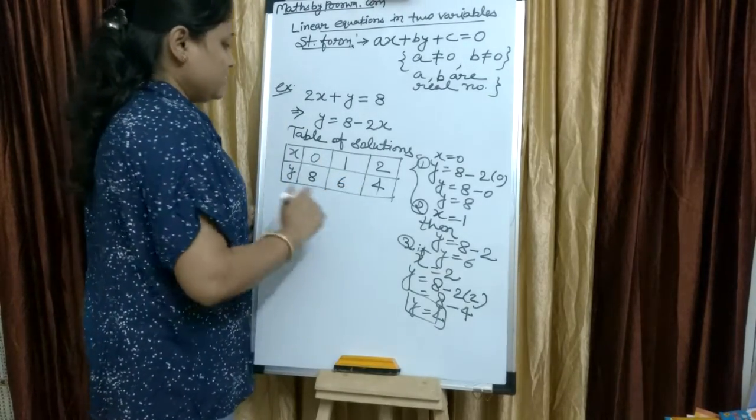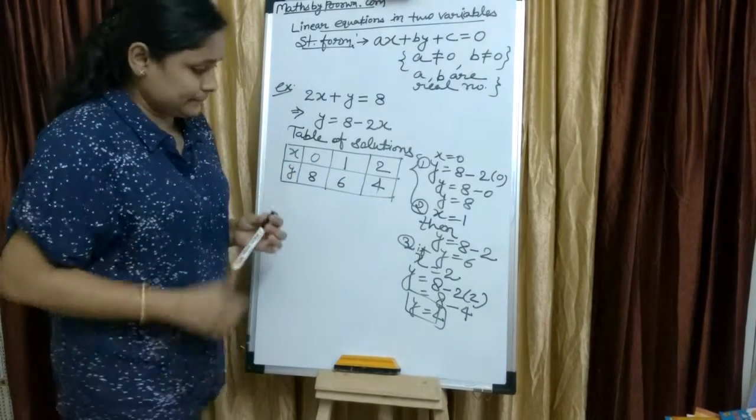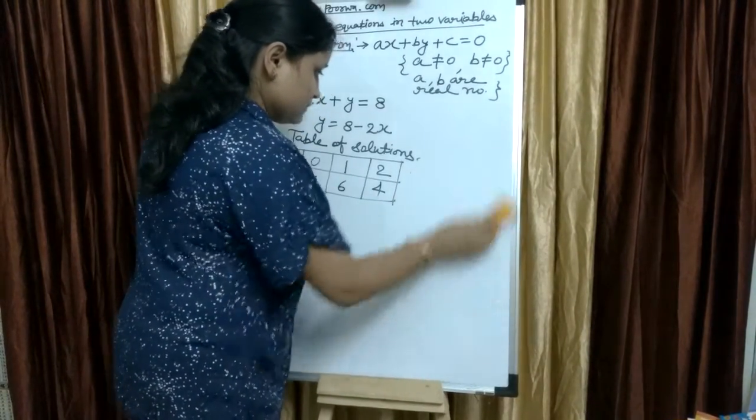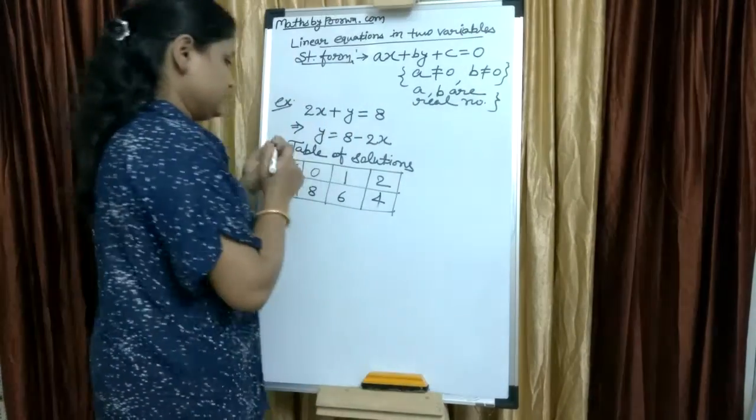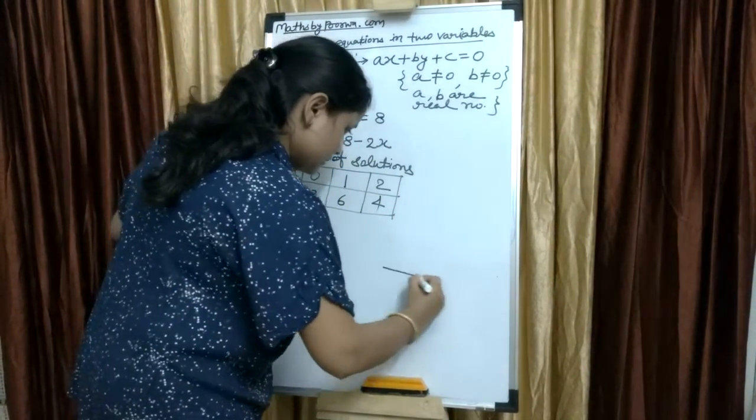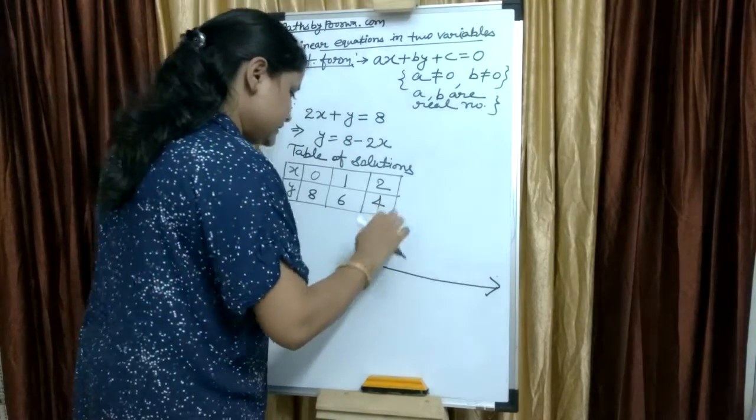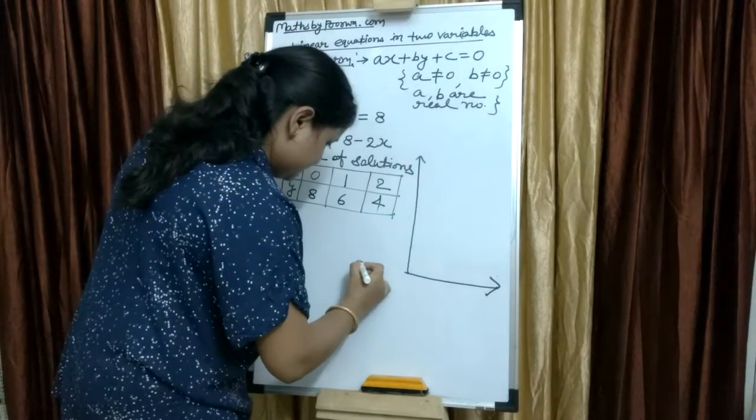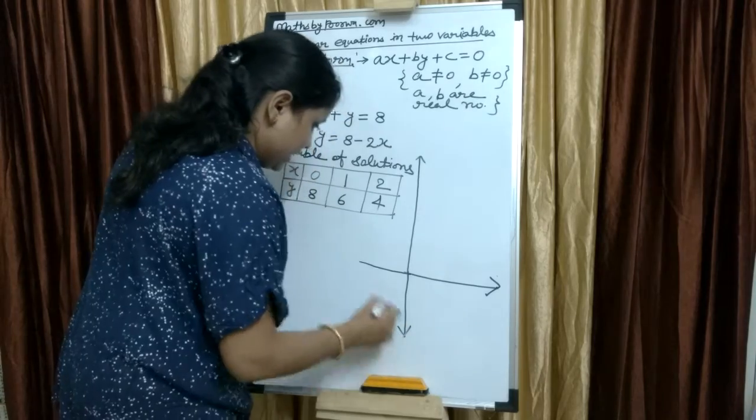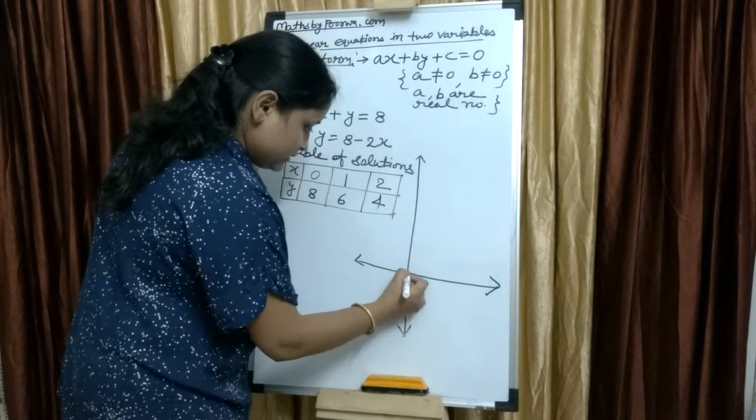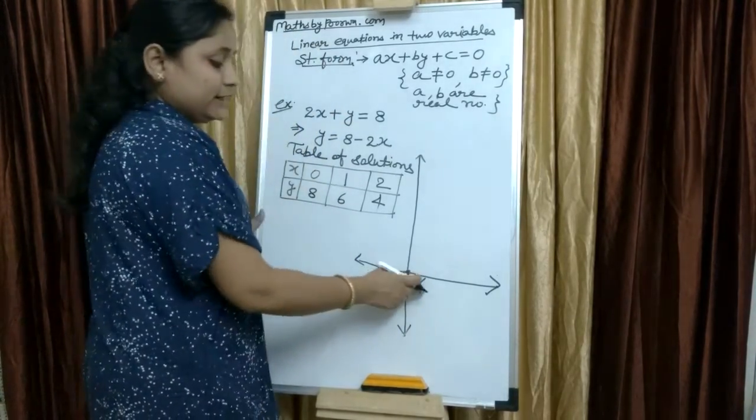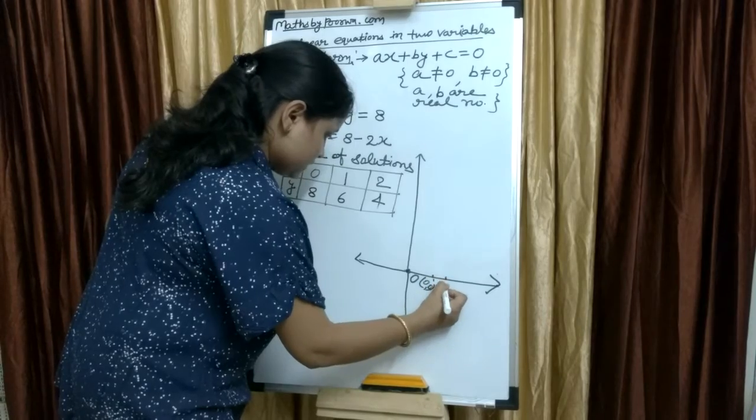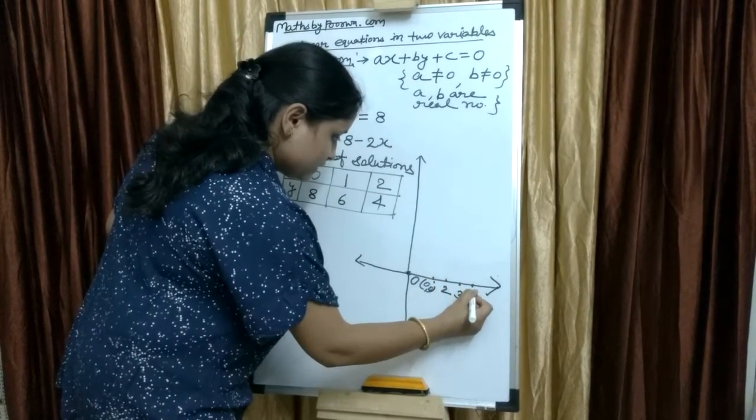So, x equals to 2 and y equals to 4. Three solutions are sufficient. Now, we will draw. X axis, this is y axis, negative x and negative y. This is origin, so O and the coordinates of origin are 0, 0. Now, 1, 2, 3, 4.